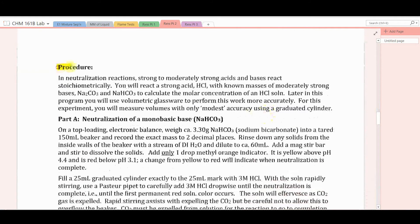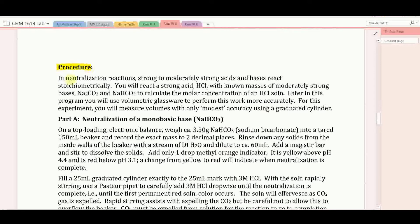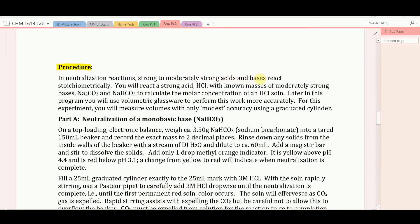In terms of the procedure, let me give you an overview. In neutralization reactions, strong to moderately strong acids and bases react stoichiometrically. A weak acid and a weak base will not react completely or stoichiometrically. But if they're moderately strong to strong, either or both, you can bring the reaction to completion. In this experiment, you'll react a strong acid, HCl, with known masses of moderately strong bases, sodium carbonate, and a somewhat weaker base, sodium bicarbonate. Then you'll be asked to calculate the exact molar concentration of the HCl solution.